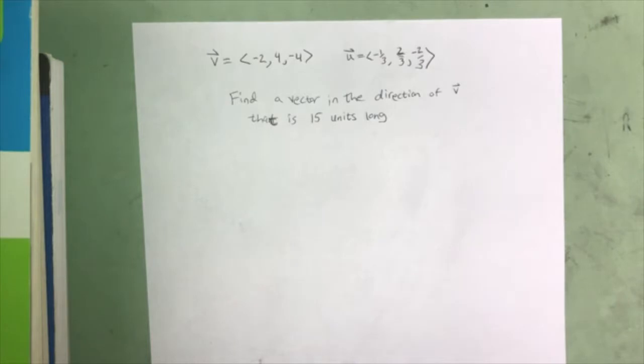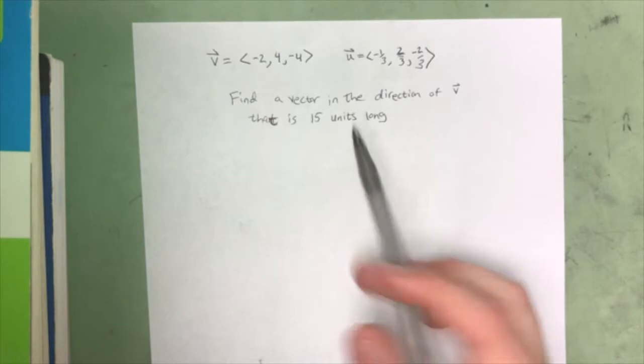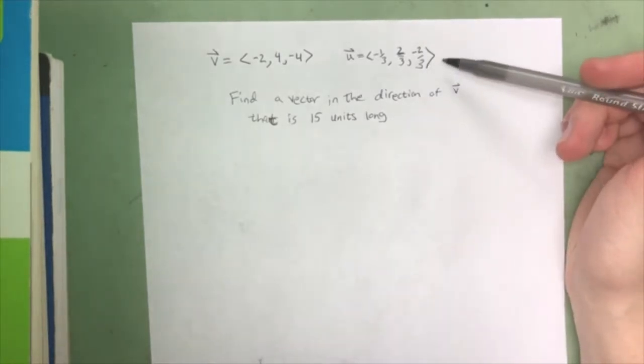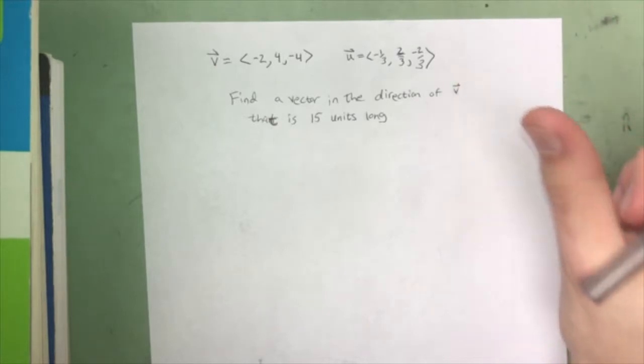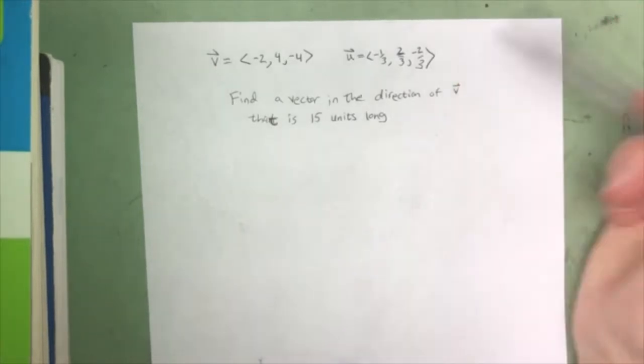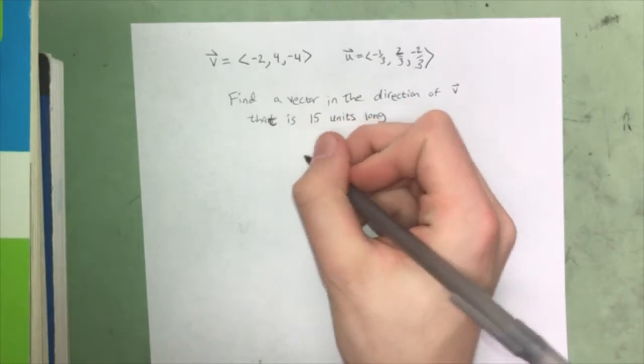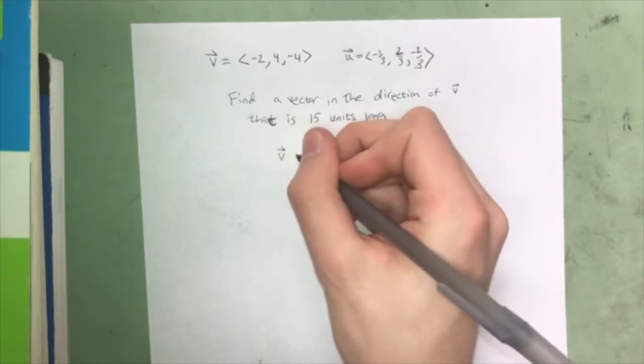What we're going to do now is find a vector that is in the direction of v that is 15 units long. Now u is a unit vector of v, which means whenever you have a unit vector it's in the same direction as the vector it came from, and it's one unit long.